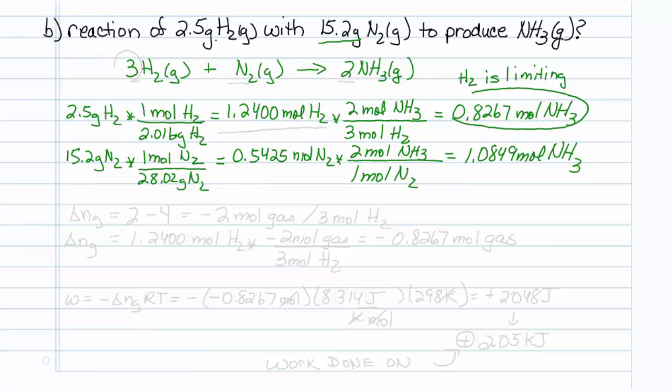Let's figure out delta NG for the reaction as it's written. We have 2 moles of product gas and 4 moles of reactant gas. So delta NG for the reaction as it's written is minus 2 moles of gas, and that will be every 3 moles of H2.